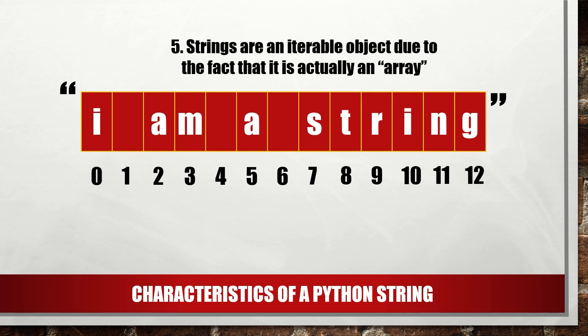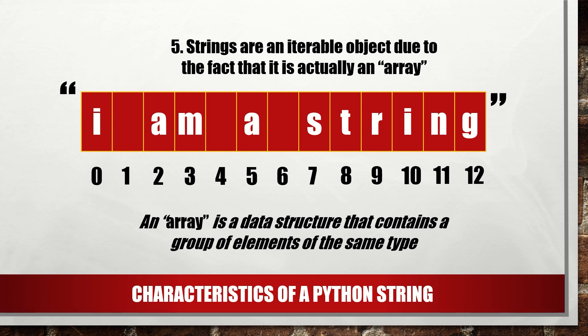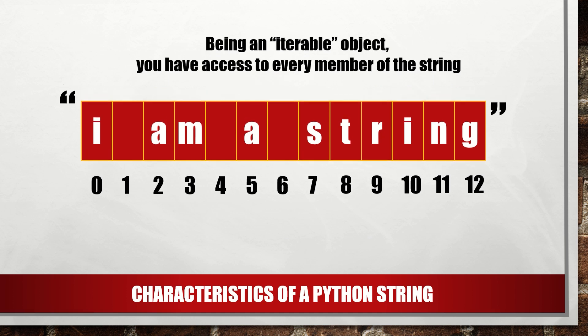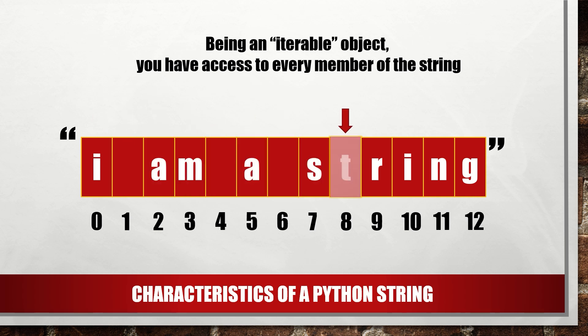Strings are an iterable object due to the fact that a string is actually an array. An array is a data structure that contains a group of elements of the same type. Iterable objects are data structures that allow access to their individual members or elements. A string is one type of this kind of object. Allowing access to elements provides a way to process them individually or collectively.